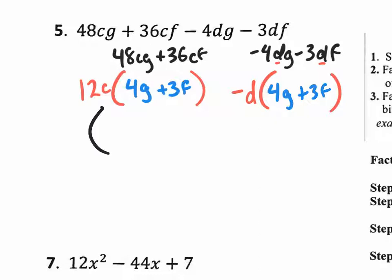So the last step on factoring by grouping is to put some exaggerated parentheses. Take out that common binomial. In this case, it's 4G plus 3F and bring down what's left over. This 12C that's left over, bring that down.